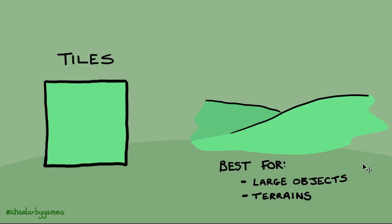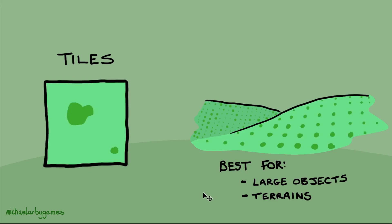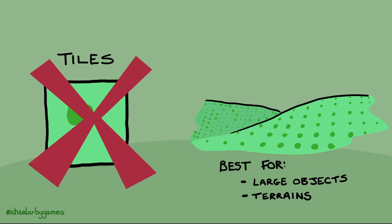Next we're going to look at tiles. Tiles are less useful for single objects, but they are great for doing things like terrains or large building objects, large walls, and things like that. Tiles are designed to be stacked beside each other — like tiles in your bathroom or kitchen — side by side, top to bottom, in rows and columns. It's really important that when you make your tiles you include very few unique or identifying features, otherwise you end up with that feature repeated over and over, making the tiling really obvious.